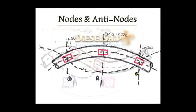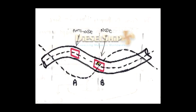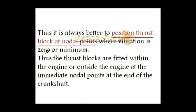Looking at the next picture, the node shows no or minimal vibration and the antinode is the point of maximum vibration. The thrust block must always be placed at the nodes, not at the antinodes. The thrust block can be placed at any of the nodal points along the shafting system. It is always better to position the thrust block at nodal points where vibration is zero or minimum. If you fit the thrust block at an antinode, the vibration is maximum and it will be subjected to huge stresses. So, the thrust block must be located at nodes.